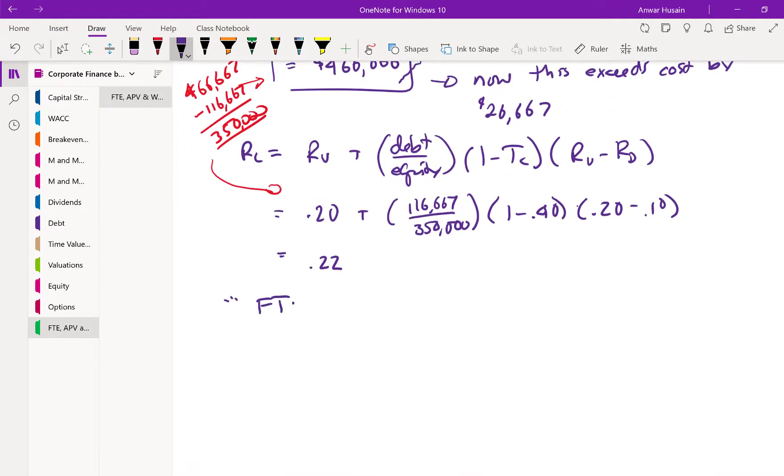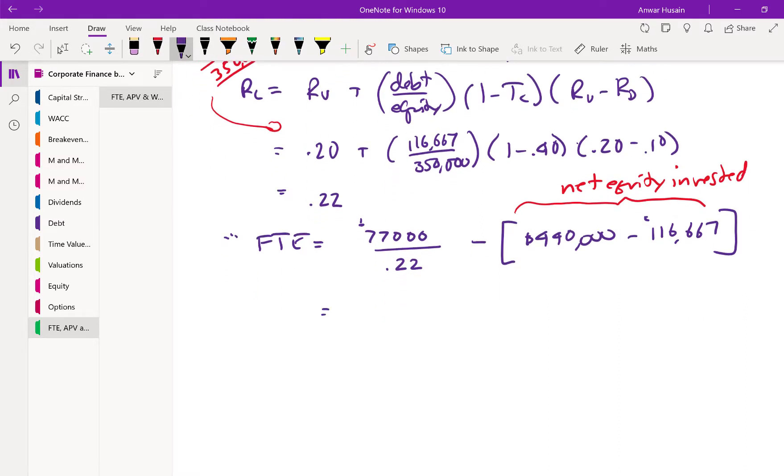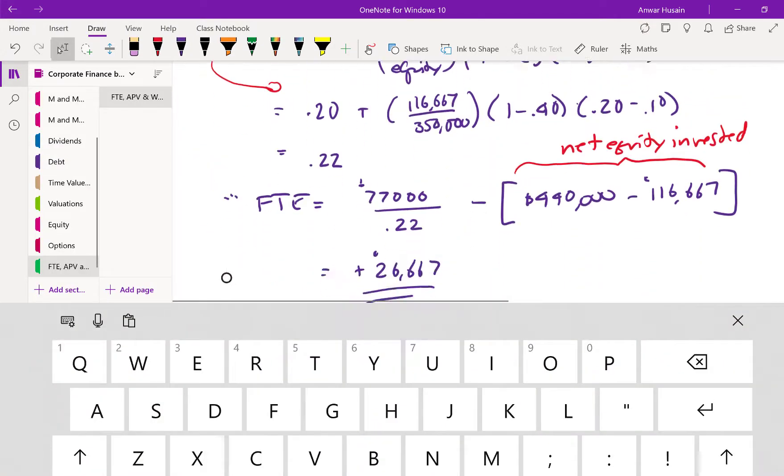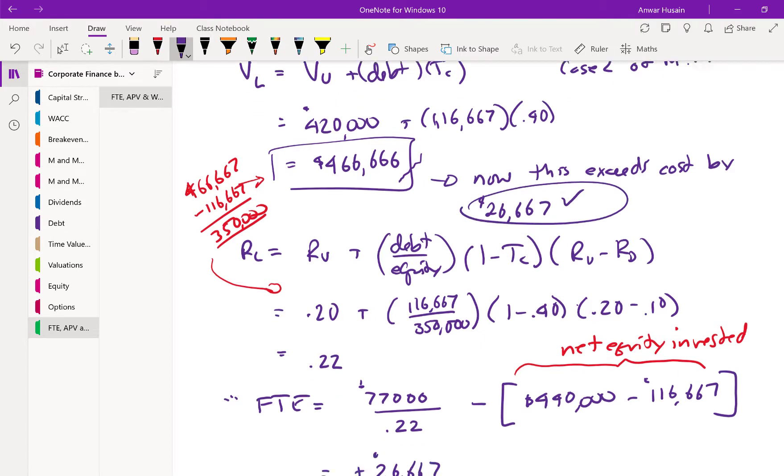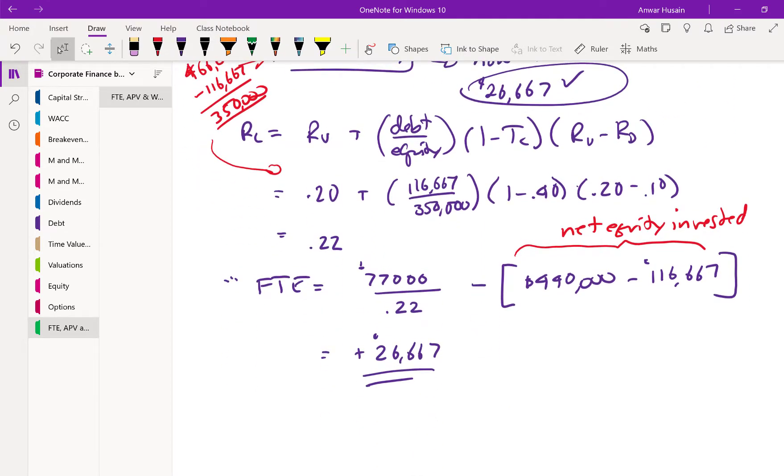Therefore, the flow through equity valuation shows us as $77,000 as the levered cost of equity divided by the levered cost of equity of 0.22 minus the investment amount, which was $440,000 less the amount of debt, which was $116,667. This is essentially another way of saying the net equity invested, since part of it was funded by debt. Our value comes out to $26,667, exactly the number that we calculated a little further up here when I did that levered cash flow valuation. It works out the same way using that approach, the formula for FTE.